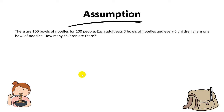Let's go through a challenging question involving assumption. There are 100 bowls of noodles for 100 people. Each adult eats three bowls of noodles, and every three children share one bowl of noodles.